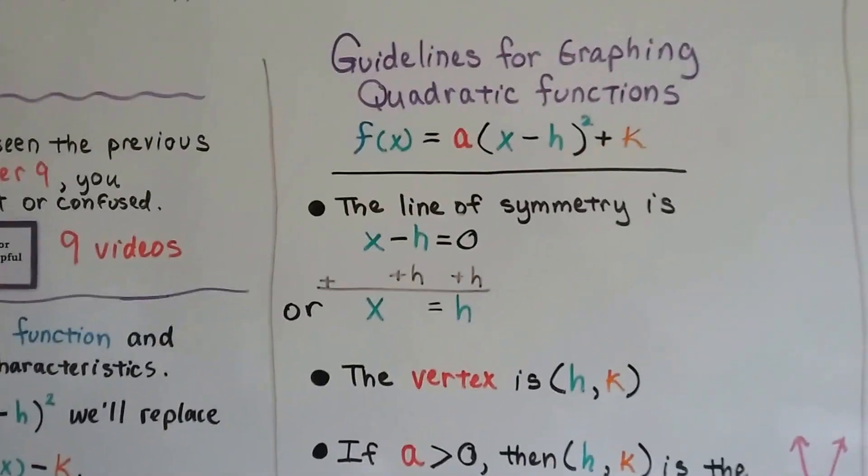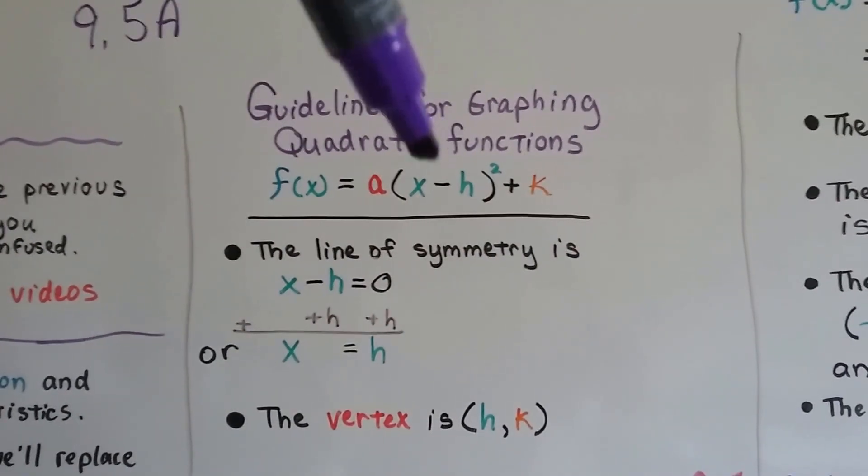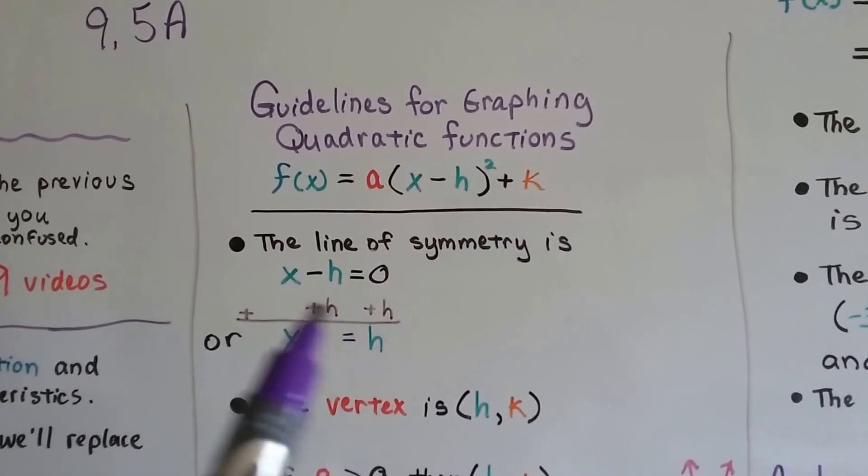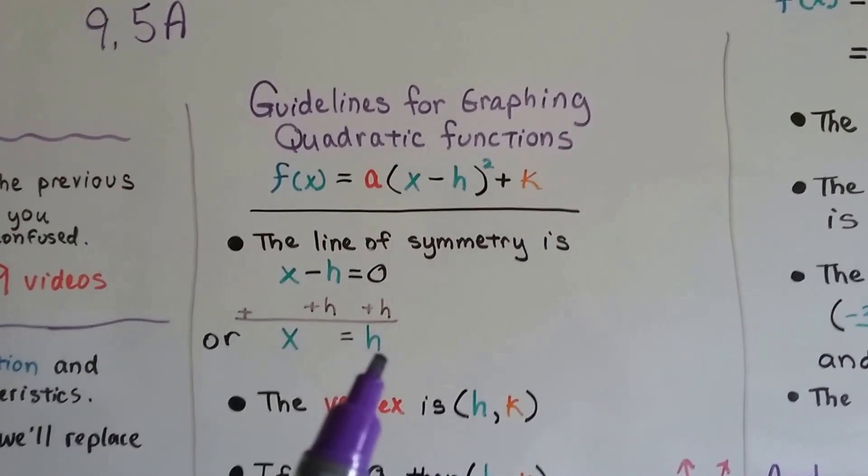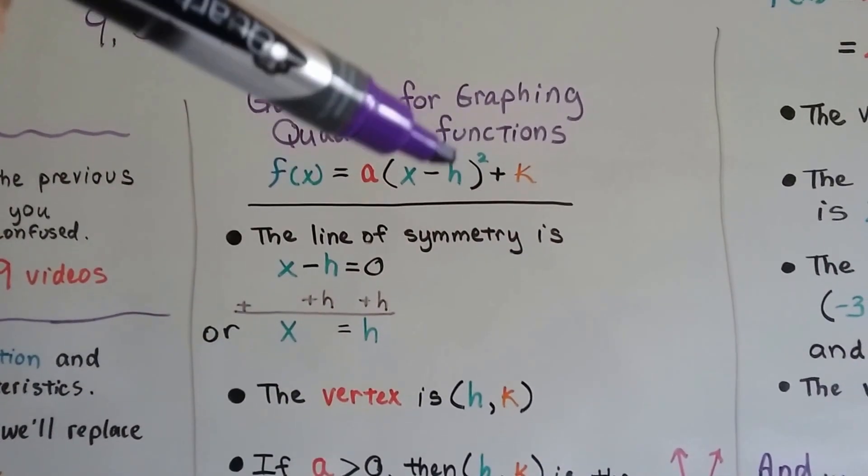So I have some guidelines for you for graphing quadratic functions. The line of symmetry is x - h. If we set it to equal zero and add h to each side of the equation, we get x = h. That's our line of symmetry. And the vertex is the point (h, k).